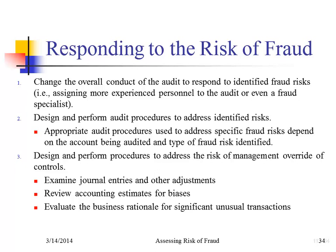For example, if the auditors say they do have effective operating controls, however management has a temperament or an approach where they're overriding controls or they're dominant — that increases the fraud risk. So auditors will say: even though controls are effective, we're still going to want to look at more transactions. We're going to focus our effort in those areas where management is likely to override internal controls — those transactions that would be affected by that decision. Basically, that's their response to audit risk.